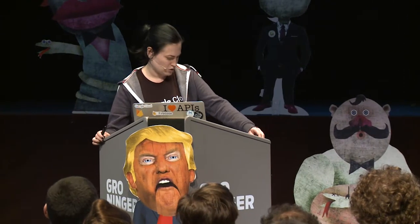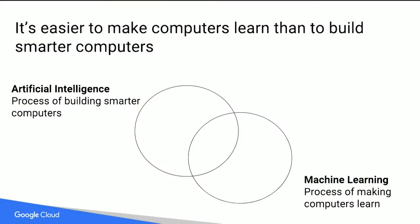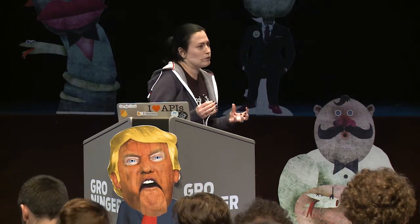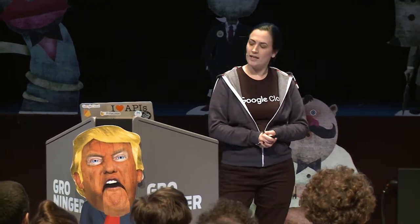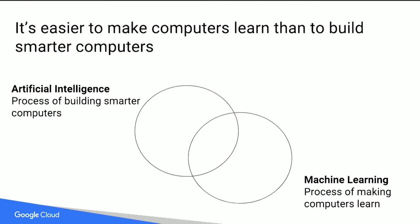Many people ask: is machine learning the same as artificial intelligence? Not exactly. Artificial intelligence is about the process of building smarter computer software — think writing if-else statements. With AI there's always a way you can break it. Machine learning is more the process of making a computer learn by itself. And it's actually much easier to let a computer learn than to manually build software that is smart.